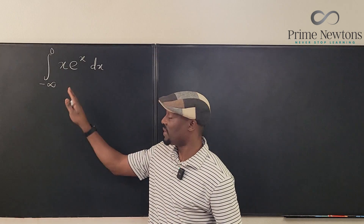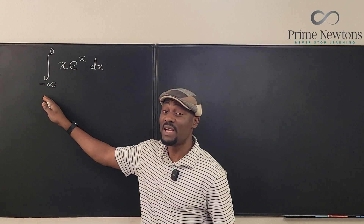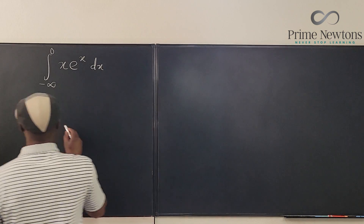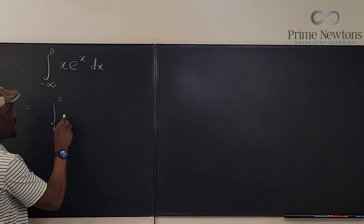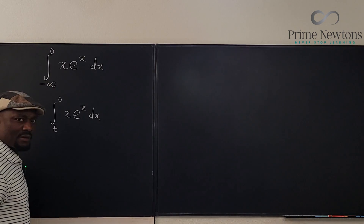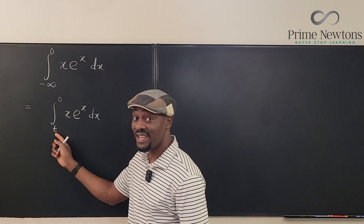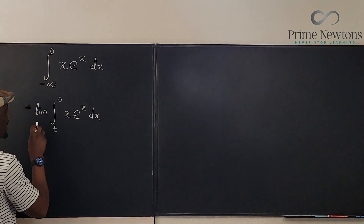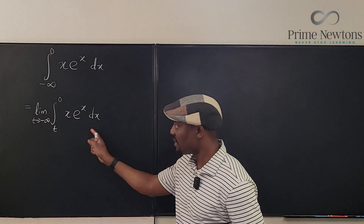Every time you get a problem that looks like this, it is always reasonable — and it is the only acceptable way — to rewrite it. We rewrite the integral as going from t to zero of x·eˣ dx, where t is approaching negative infinity. So we write the limit as t goes to negative infinity.